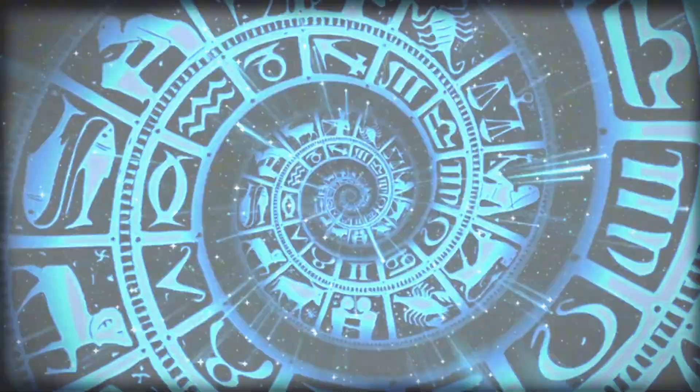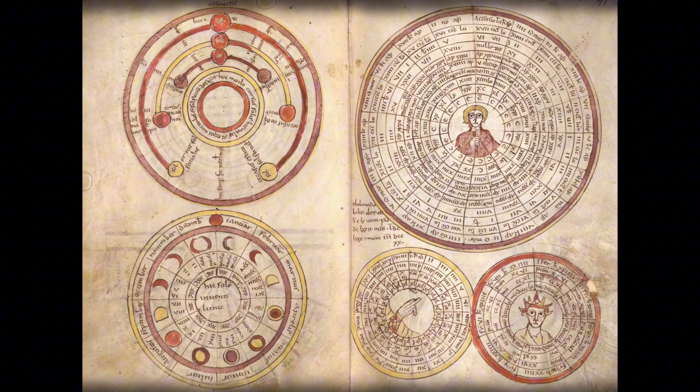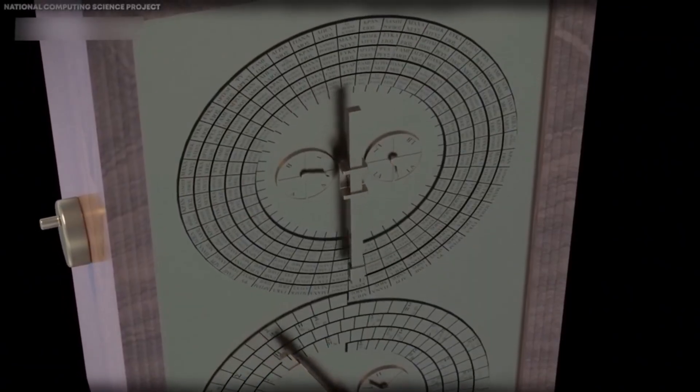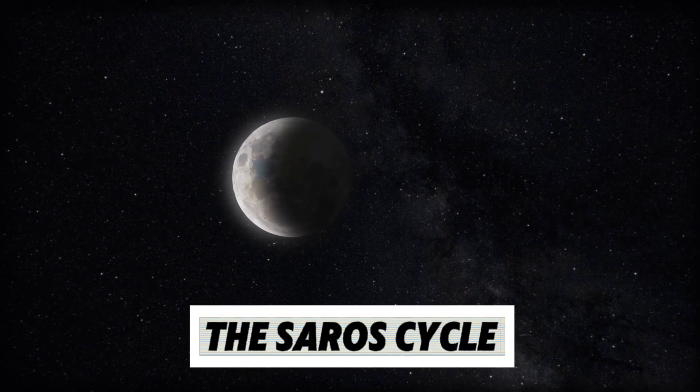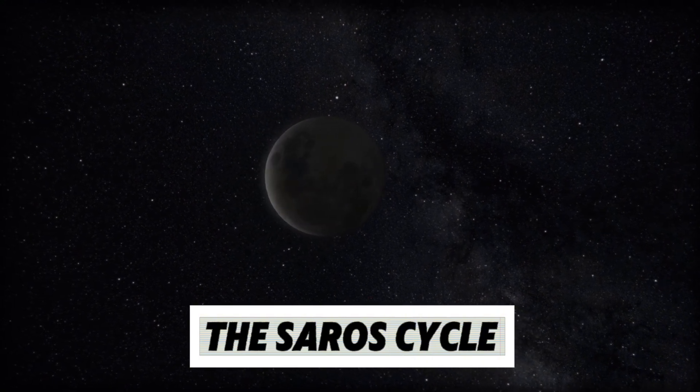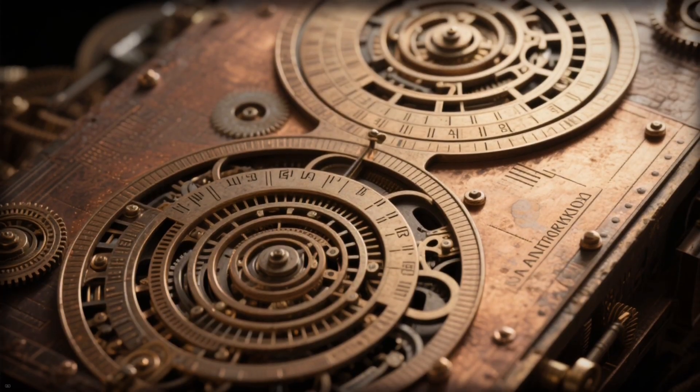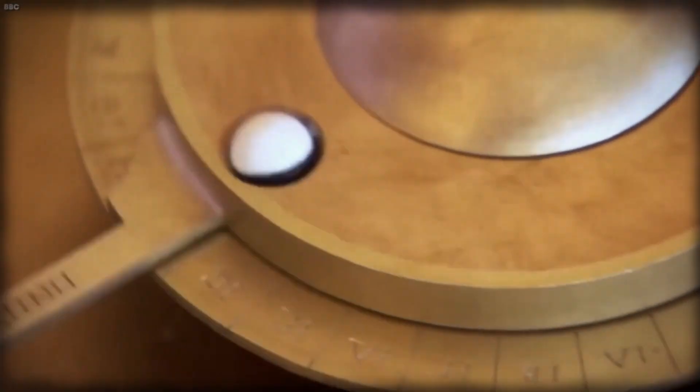The back of the mechanism revealed two large spiral dials. One tracked the Metonic cycle, a 19-year rhythm that kept the Greek lunar calendar aligned with the seasons. The other traced the Saros cycle, predicting eclipses, down to whether they'd be visible at day or night over Greece.